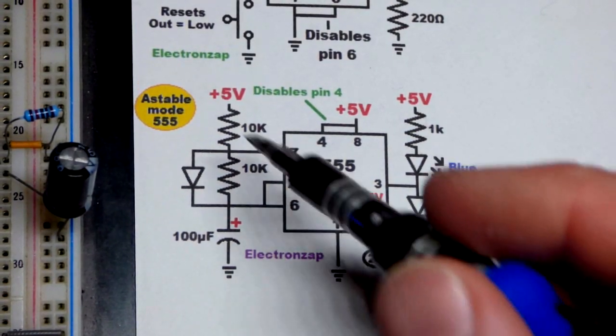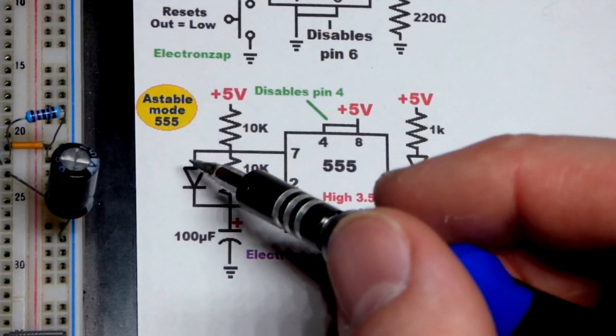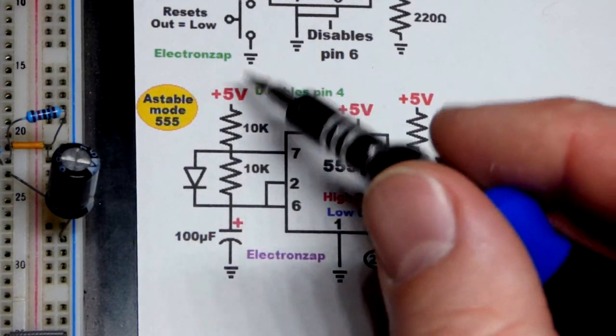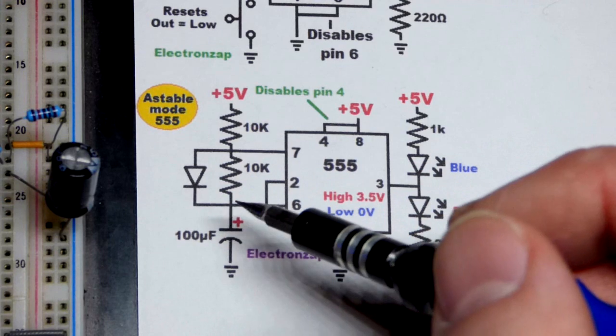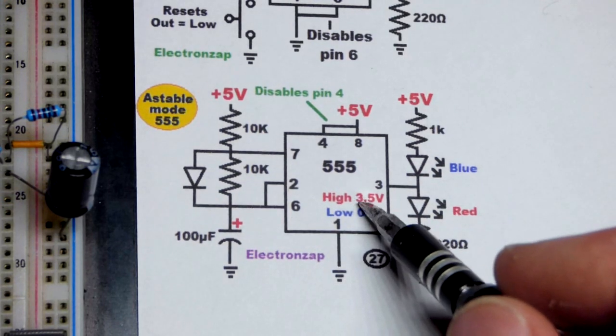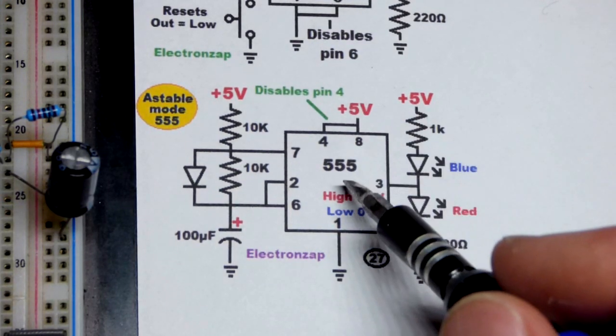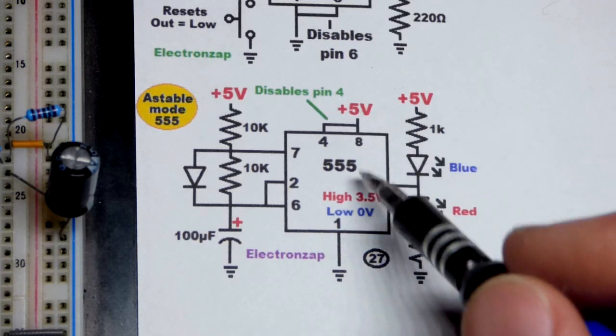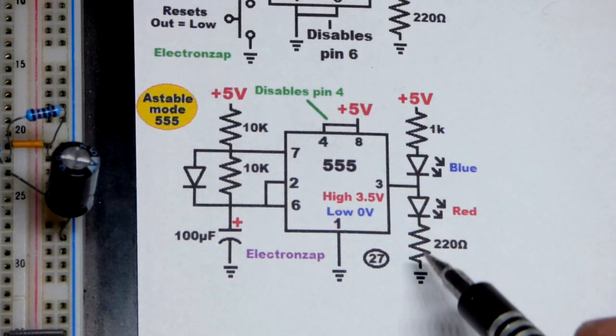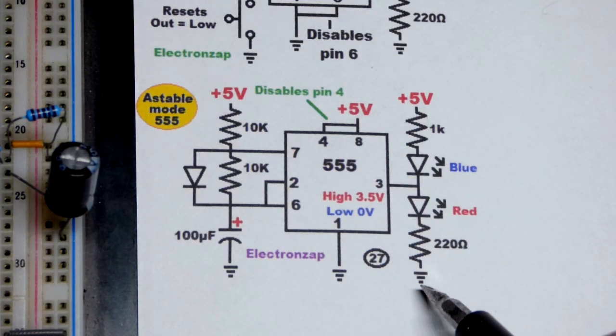So as I said before, while the capacitor's charging, like when you first apply power, it goes through the 10k resistor, the diode, and charges the capacitor. At that time, the output is also high. It has to go through a couple transistors, so you lose about a volt and a half. But in any case, the red LED will light up.